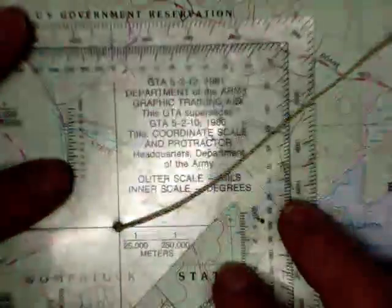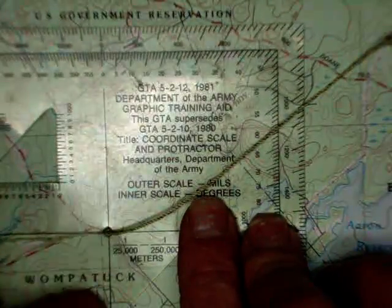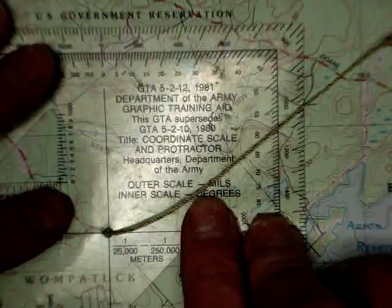Take your protractor, put the center of the protractor right on that junction of that trail. Make sure this line up on your protractor is in line with the maps, with the line on the maps.